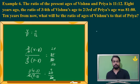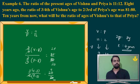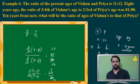So V is to P present ratio is 11 is to 12, and 8 years ago the ratio became 9 is to 10. You can see 2 parts have been removed, so 2 parts equals 8 years, meaning 1 part is 4 years. Vishnu's present age is 11 into 4 equals 44, and Priya's is 48. Ten years from now it will be 54 and 58.